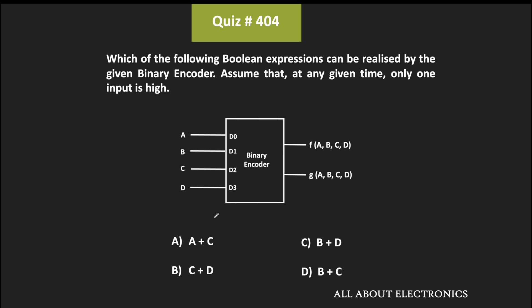Hey friends, welcome to the YouTube channel All About Electronics. In this question, we have been asked to find the boolean expressions which can be realized by the given binary encoder. We have been given that at any given time, only one input is high.